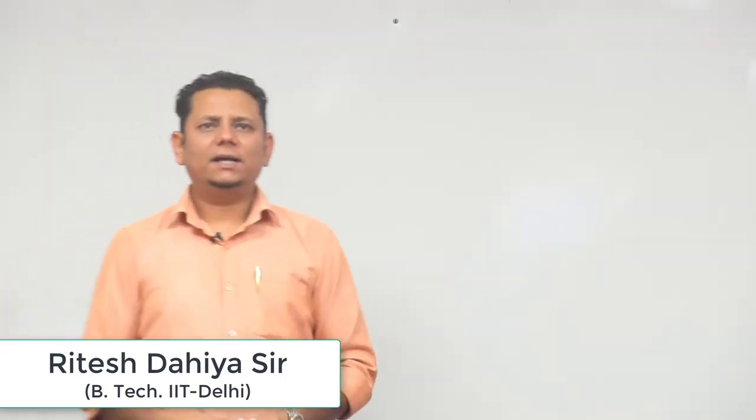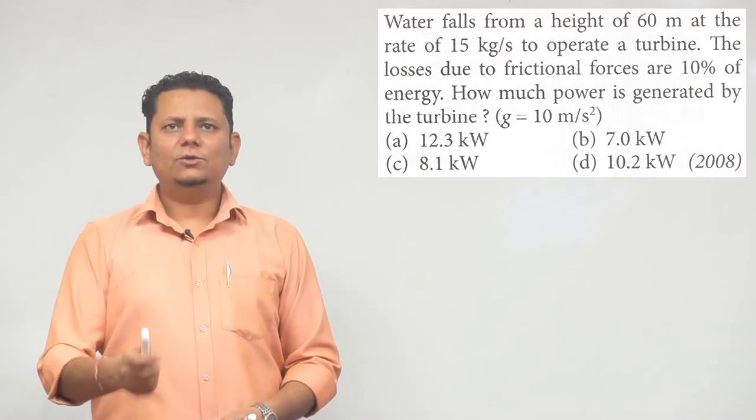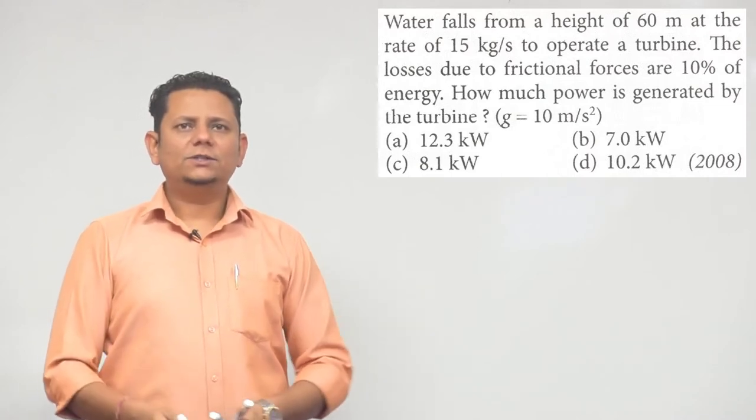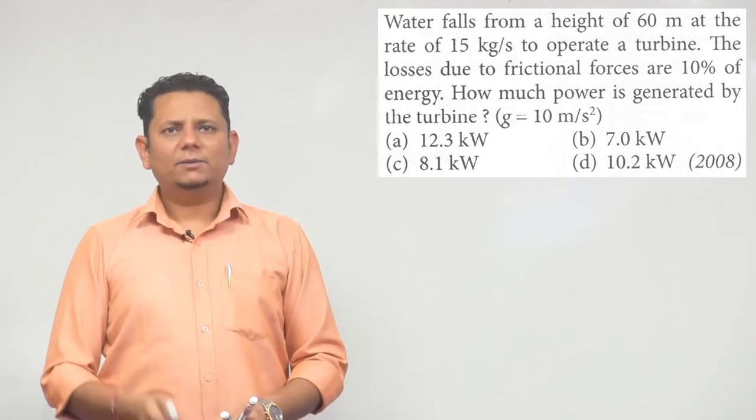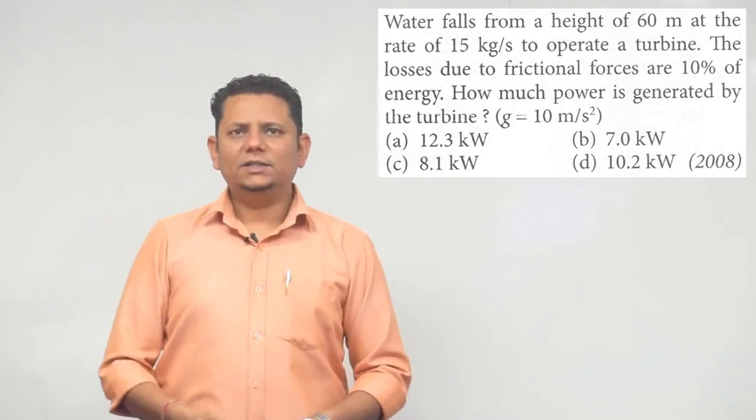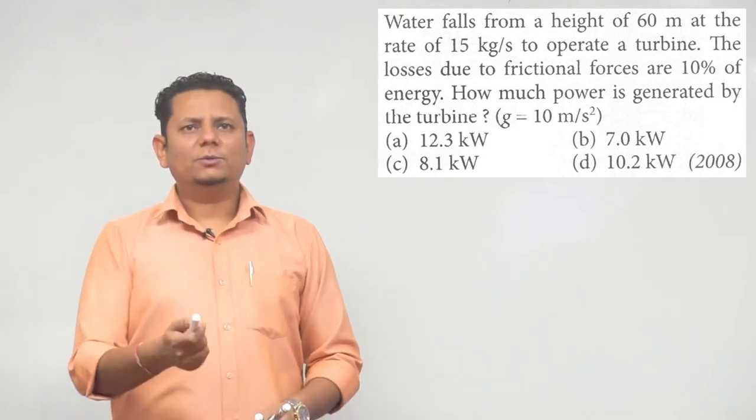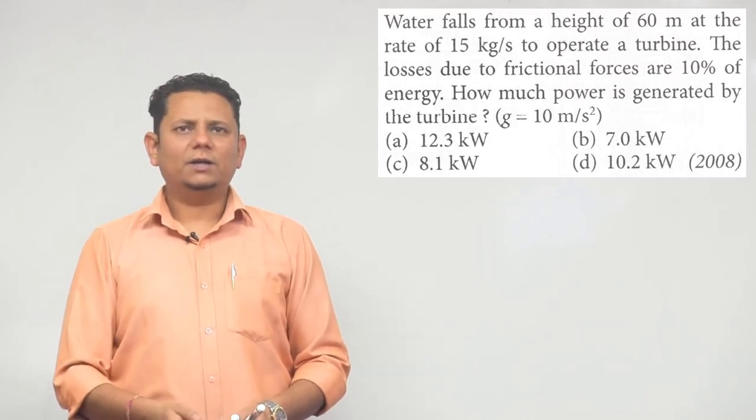Next question from 2008: Water falls from a height of 60 meters at the rate of 15 kg per second to operate a turbine. The losses due to frictional forces are 10 percent of the energy. How much power is generated by the turbine, given g = 10 m/s²? Options are 12.3 kW, 7.0 kW, 8.1 kW, or 10.2 kW.